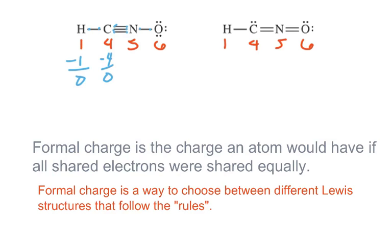Nitrogen normally has five valence electrons, but in this structure it gets one, two, three, four, so it's going to end up with a formal charge of plus one. And oxygen normally has six, but this time it has one, two, three, four, five, six that are not shared, plus one that is shared, so it's going to have seven in this structure, so it has a formal charge of minus one.